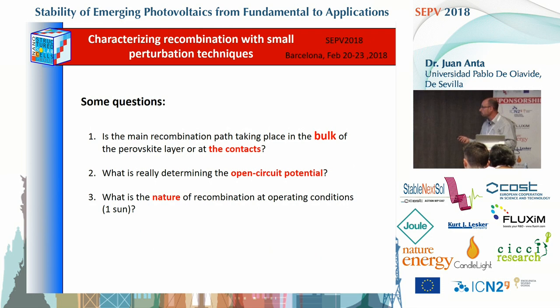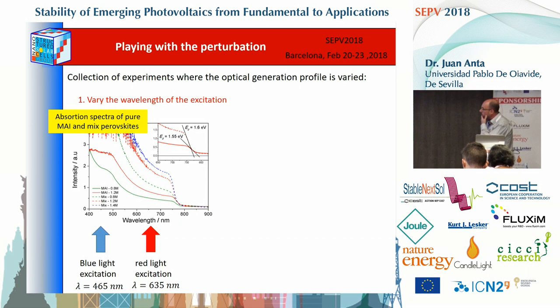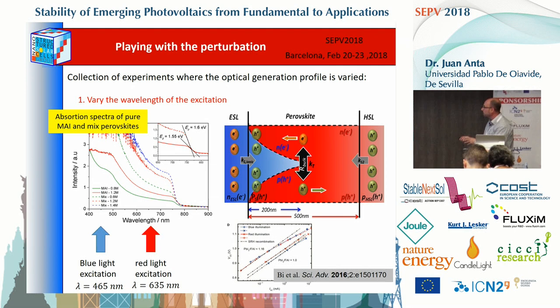Some key questions we are investigating are: what is the location of the main recombination path in perovskites — is it in the bulk or at the contacts? What is really determining the open-circuit voltage, and what is the nature of recombination under operating conditions? We perform impedance spectroscopy at open circuit and create the bias using illumination with different wavelengths. Because perovskites absorb blue light much more strongly, the optical penetration depth under blue light is much shorter than under red light, so blue-light impedance spectra probe processes preferentially near the front contact.